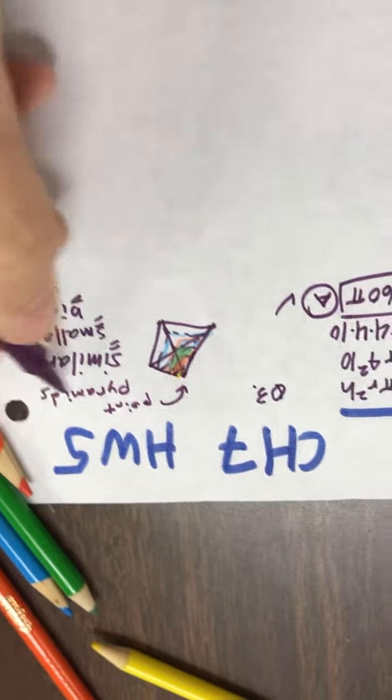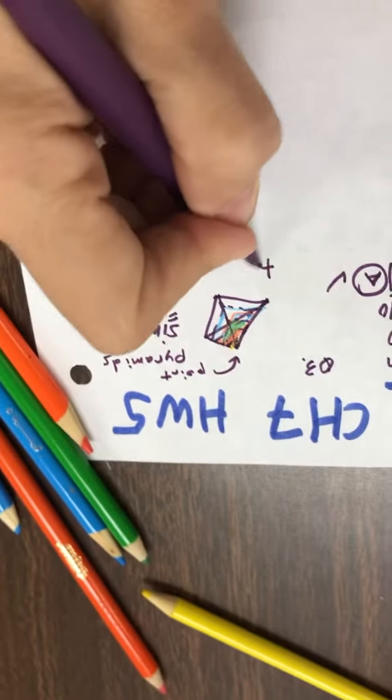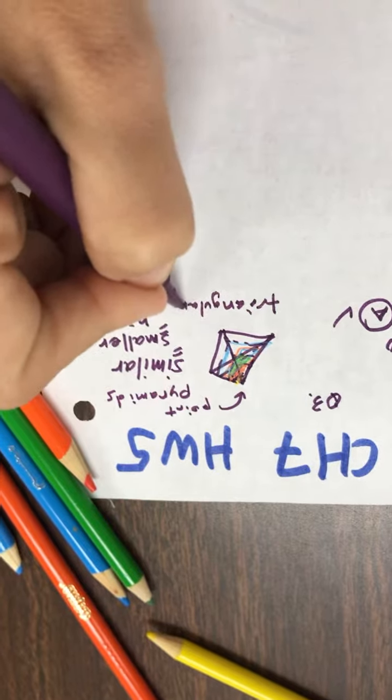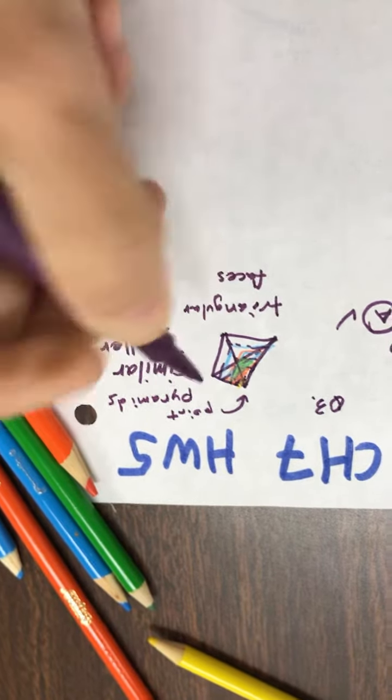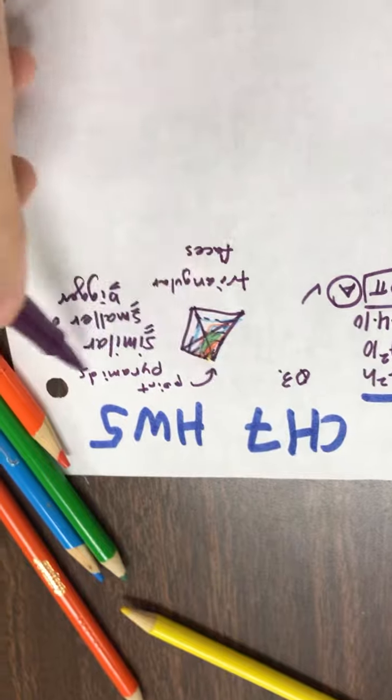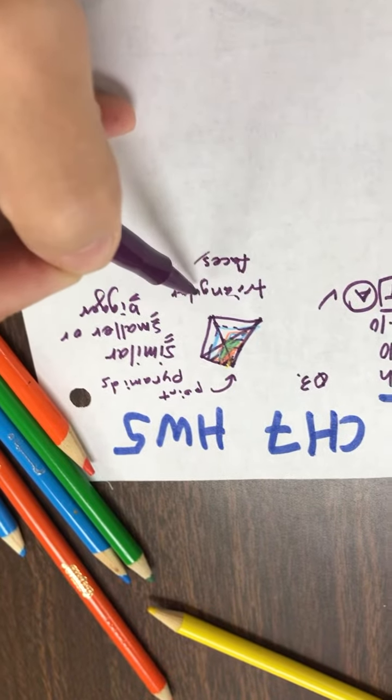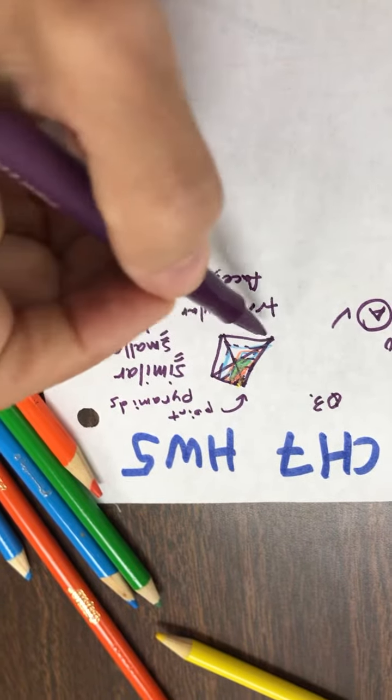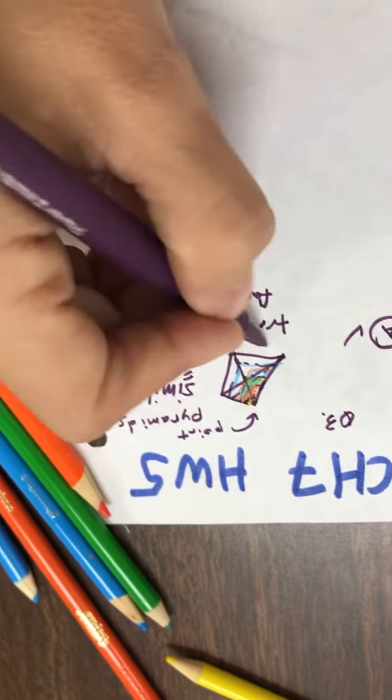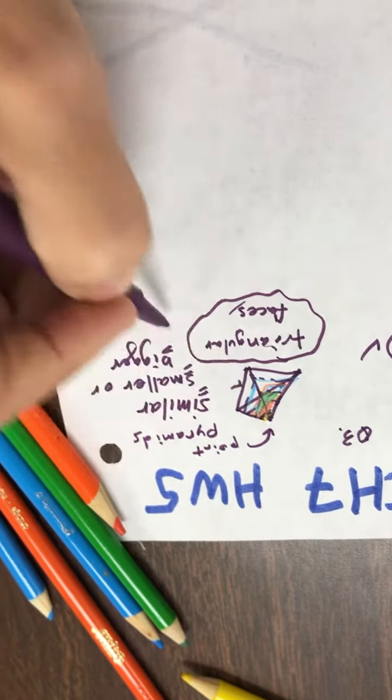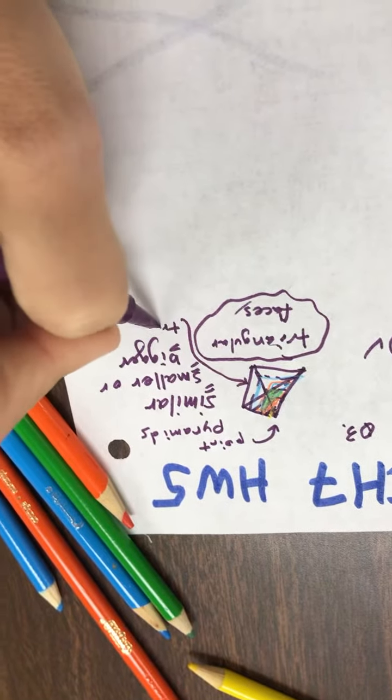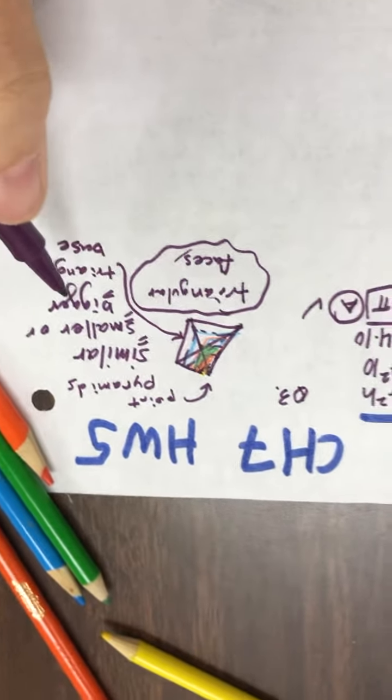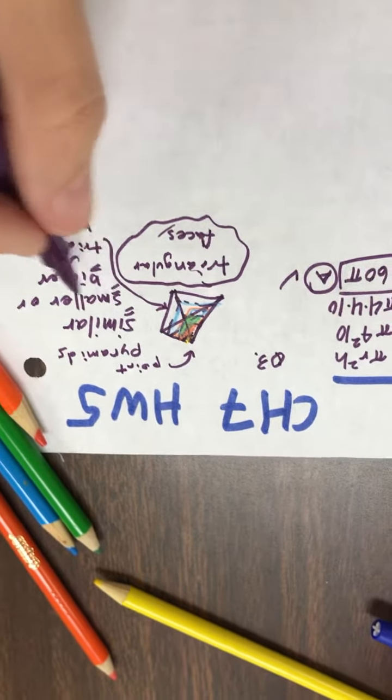And so those are called pyramids, not prisms. And so pyramids have triangular faces. So even if I stacked squares that got smaller, I would also be making pyramids and it would have triangular faces. But if I stacked squares that got smaller, it would have a square base. Here, not only does it have a triangular face, but it also has a triangular base. So this would be called a triangular pyramid.